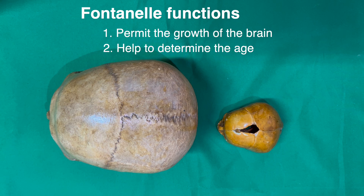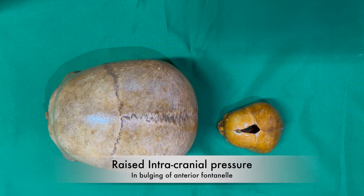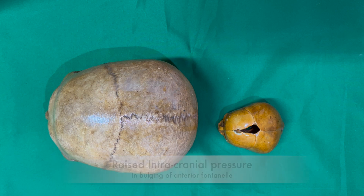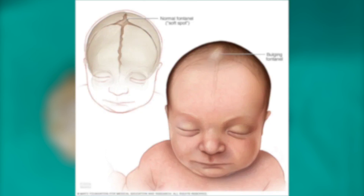A clinical significance of the anterior fontanelle is that if it is bulging, there is raised intracranial pressure. Conversely, if it is depressed, it shows decreased intracranial pressure, mostly due to dehydration.